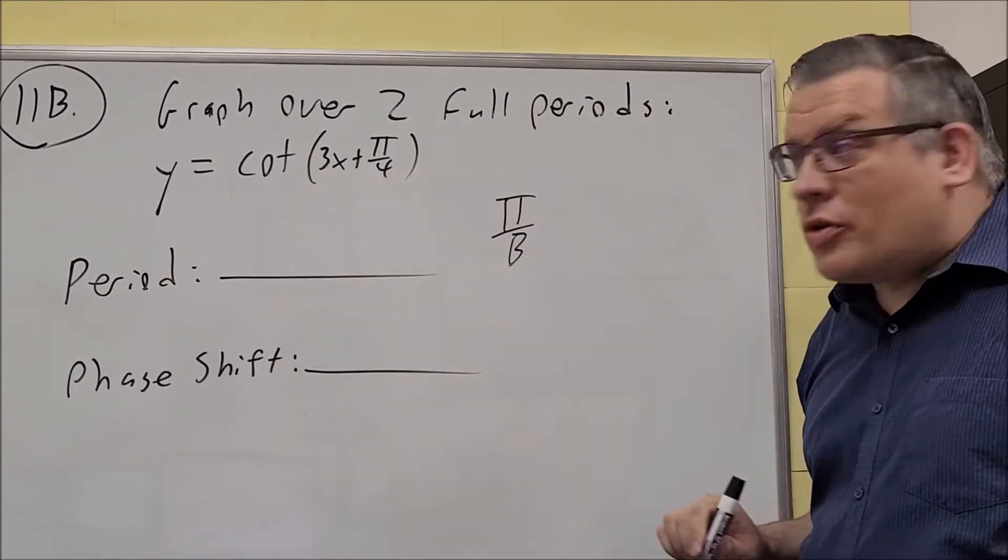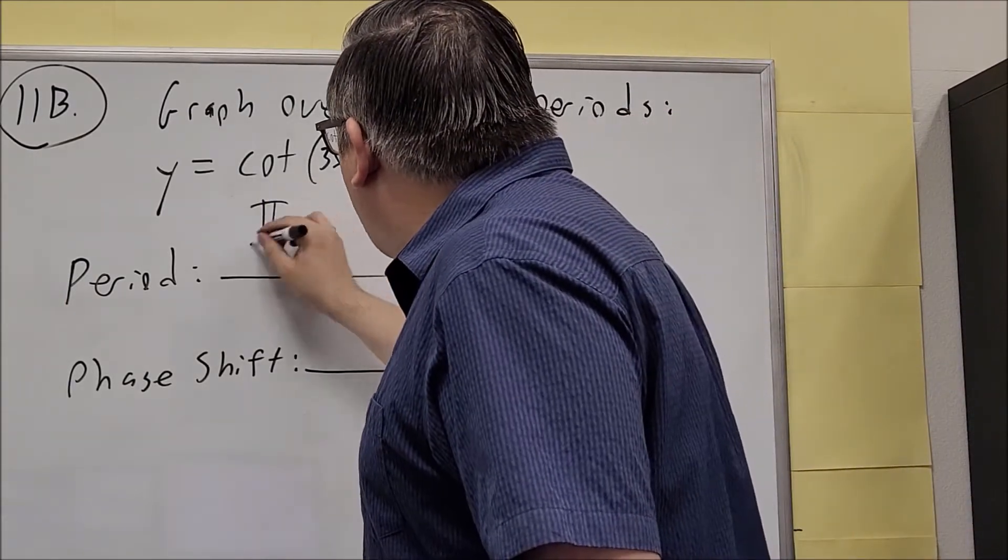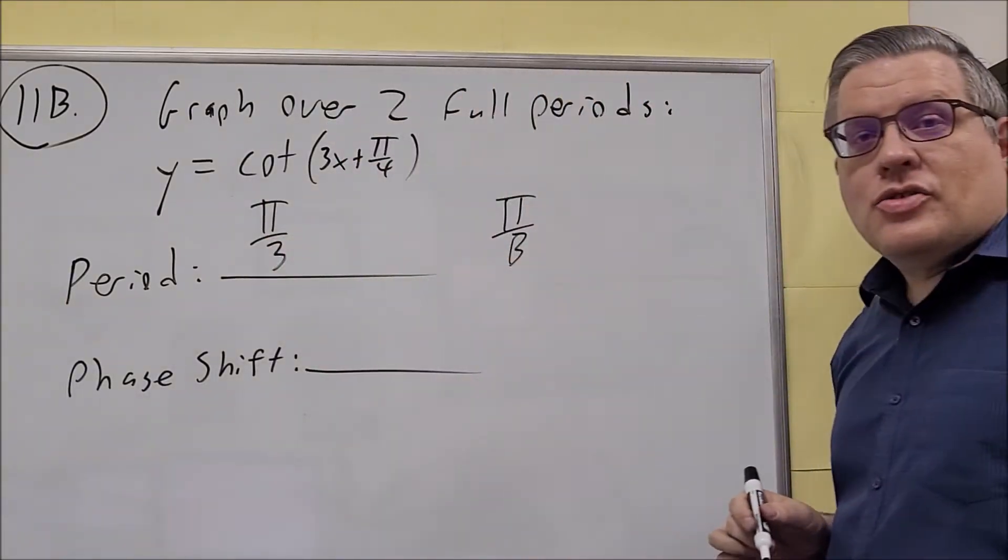The b, in this case, is 3. So it's going to be π over 3. That is your period.